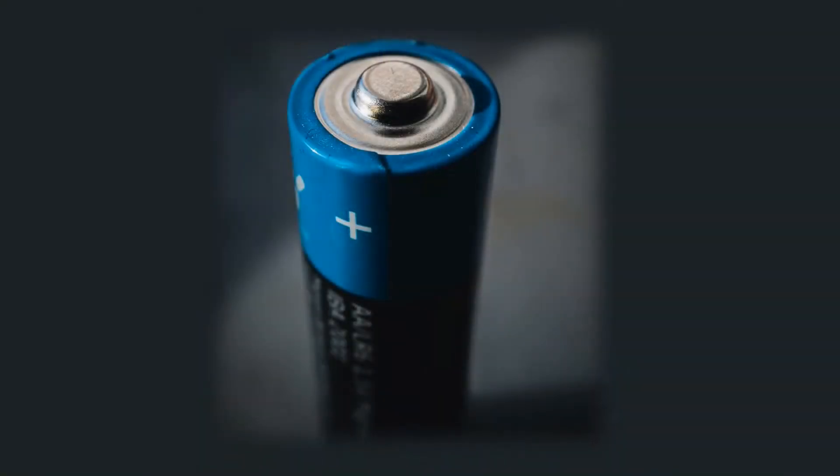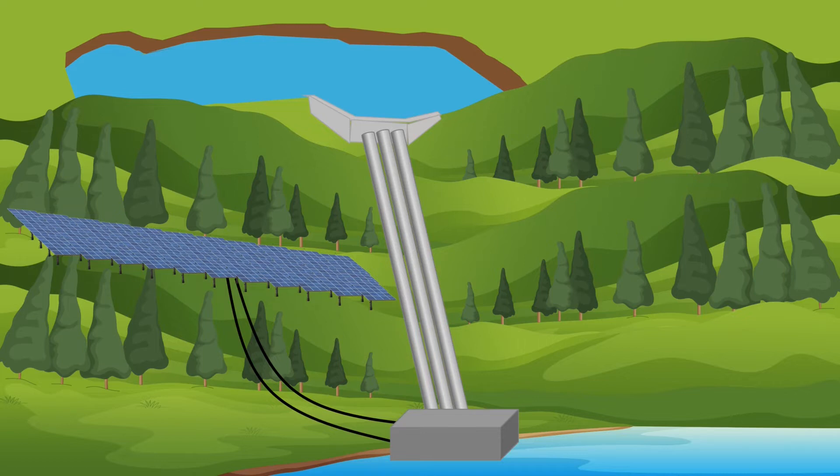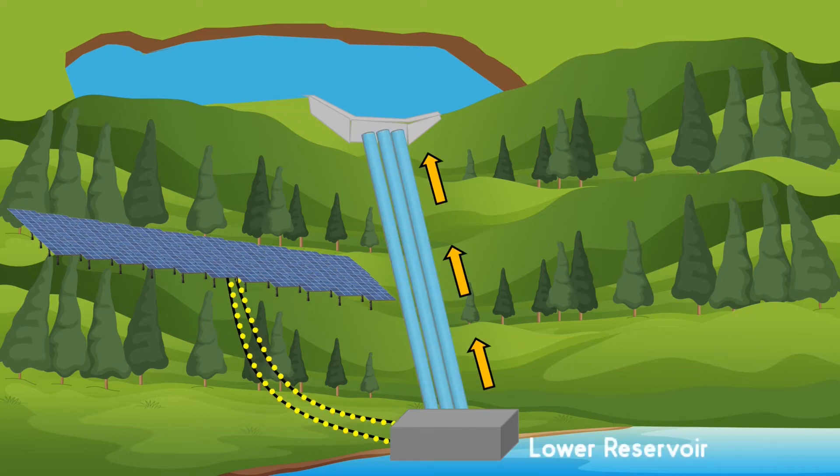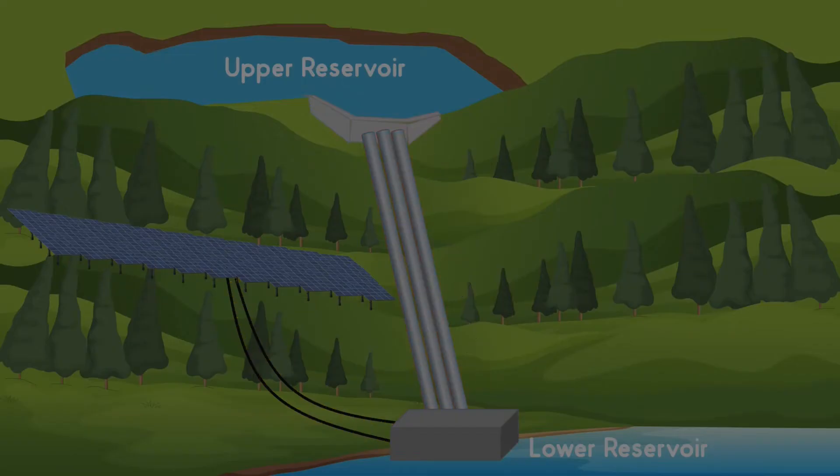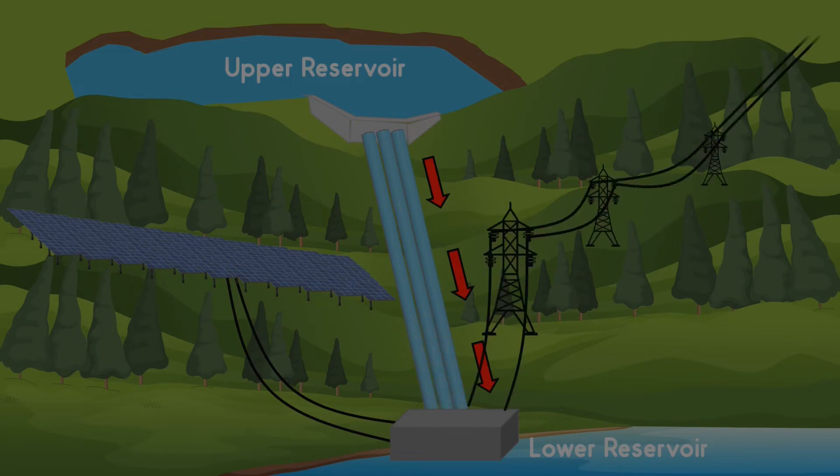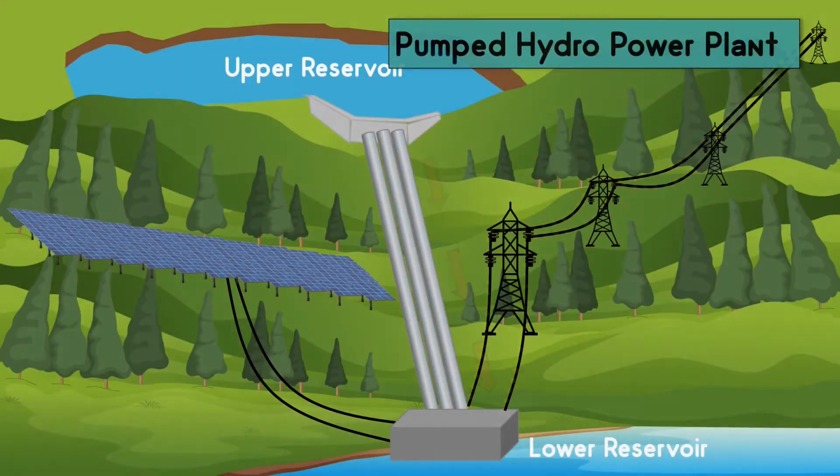Yes, you heard it right. Hydropower plants can act as a battery. Let me explain this. During day time, with the help of excess power generated from the solar panels, we can pump the water from the reservoir at a lower elevation to a reservoir at higher elevation. During night time, water is released back to the lower reservoir and turns the turbine generating electricity. This type of hydropower plant is called pumped hydropower.